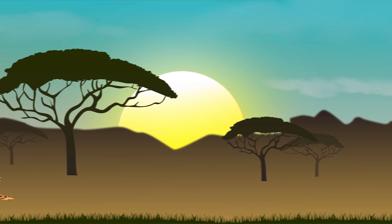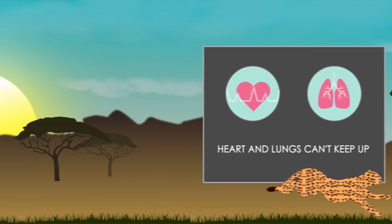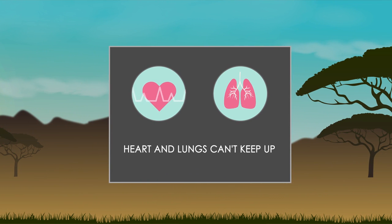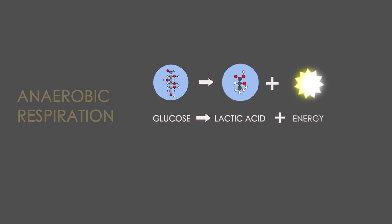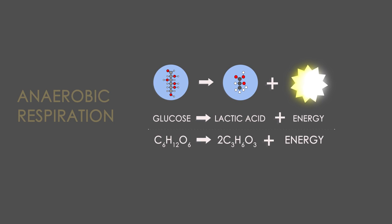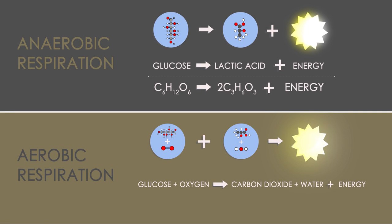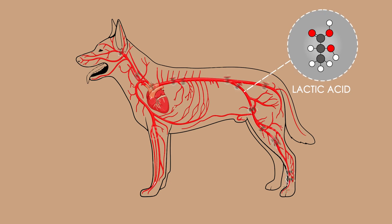Starting with animals: a cheetah sprinting to catch prey cannot take in enough air and blood around the body fast enough for aerobic respiration. The heart and lungs can't keep up, so anaerobic respiration is carried out instead. Here is the generalized equation for anaerobic respiration. Notice how it differs from aerobic respiration — there is no oxygen involved, and it is much less efficient, releasing much less energy, because the glucose is only partially broken down.